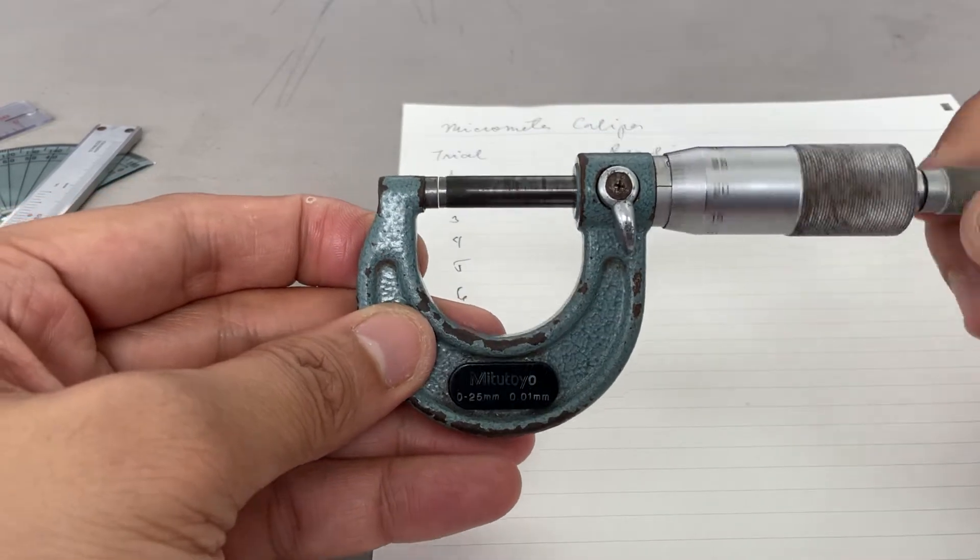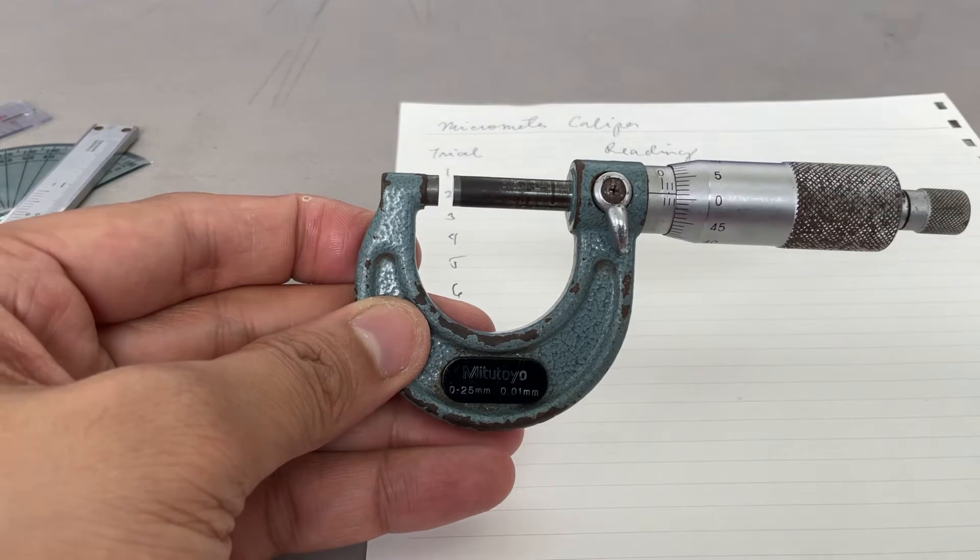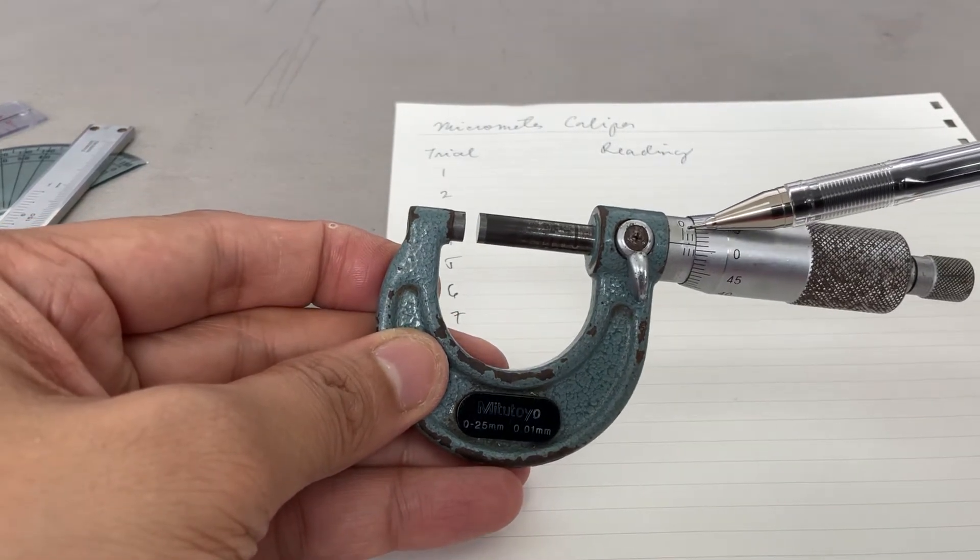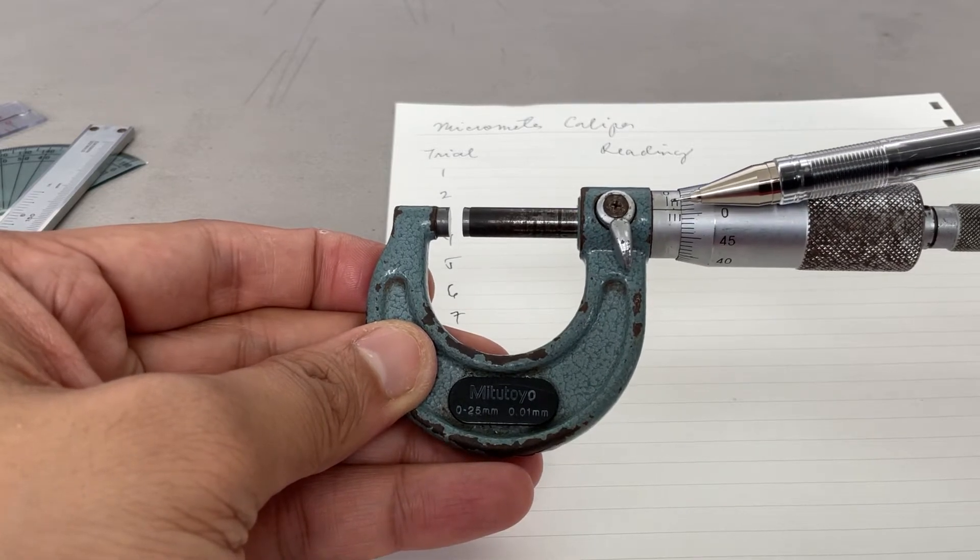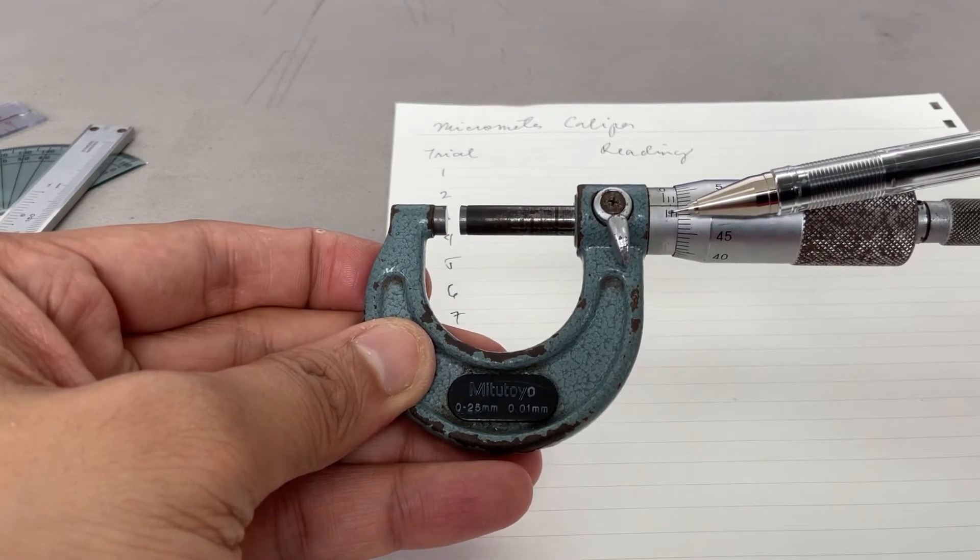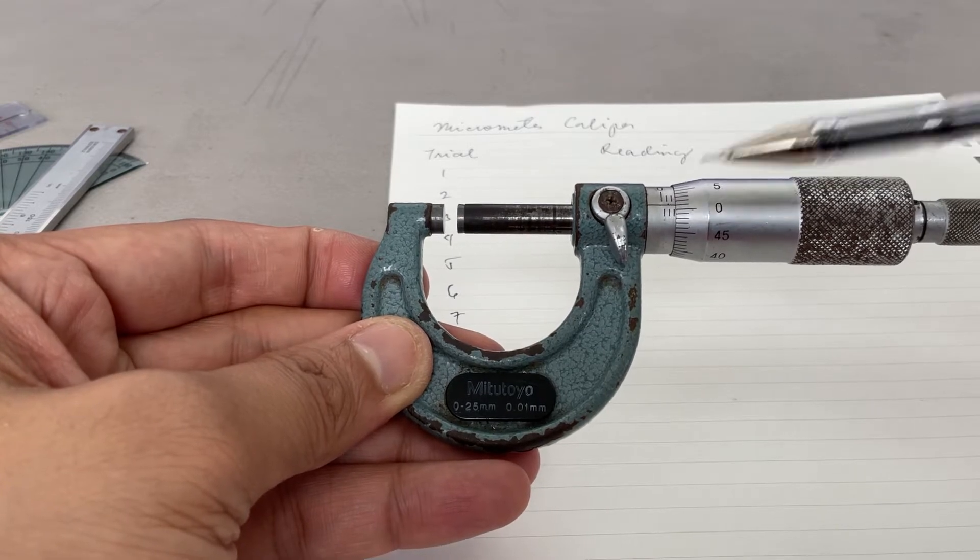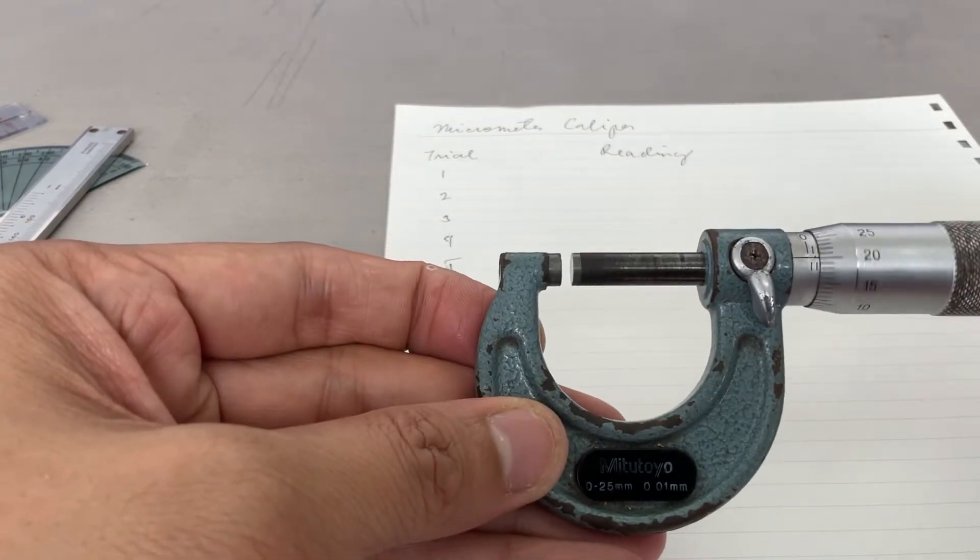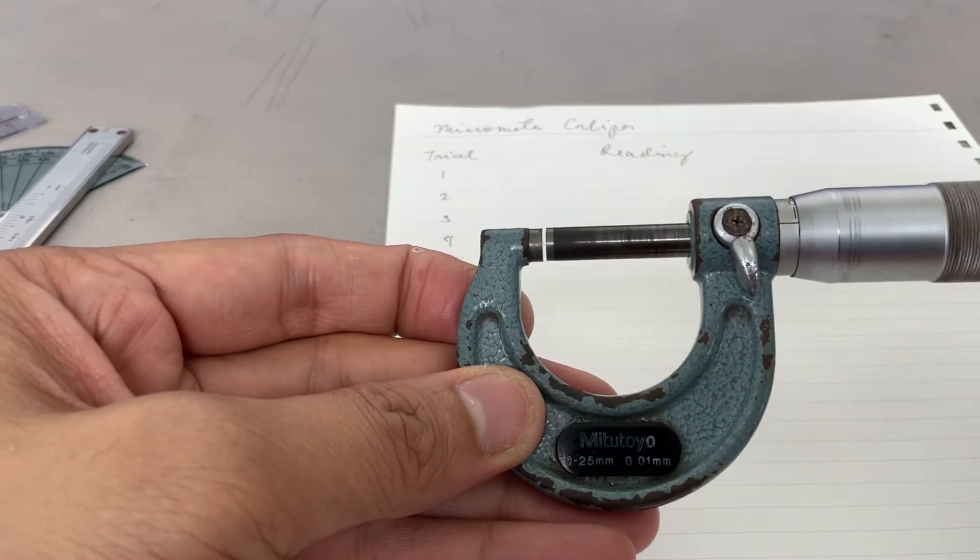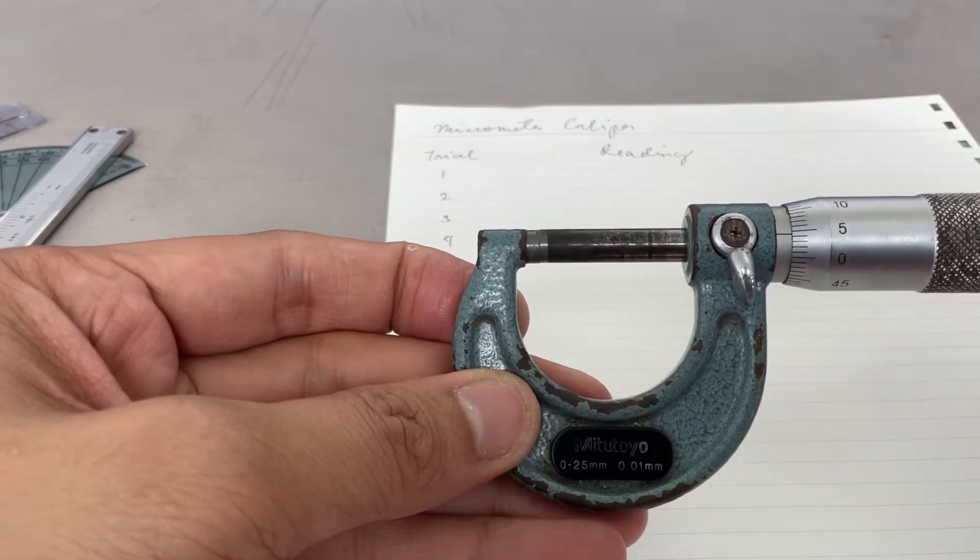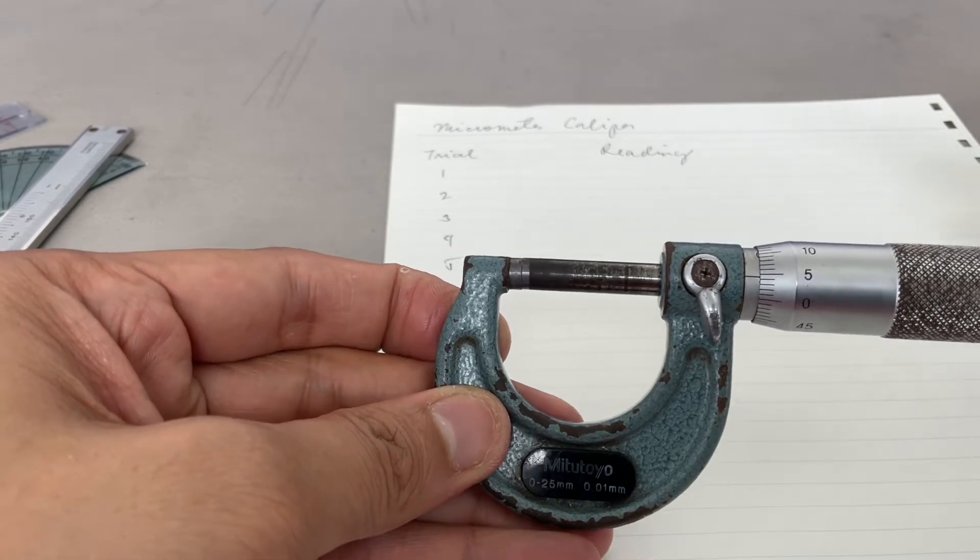On the main scale of your micrometer caliper, each division represents one millimeter. On the lower part you have half of it, 0.5 millimeter. As you can see, if I close this it doesn't stop at zero - it has a reading already. That's how sensitive it is.